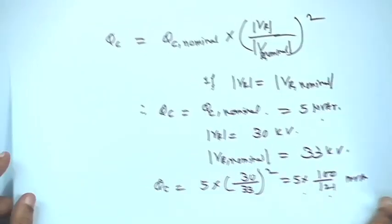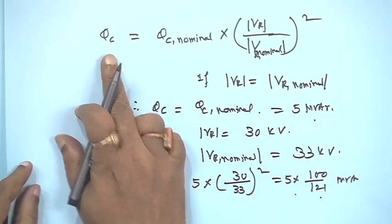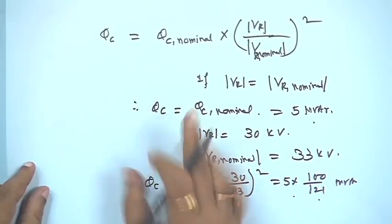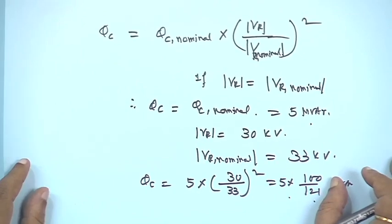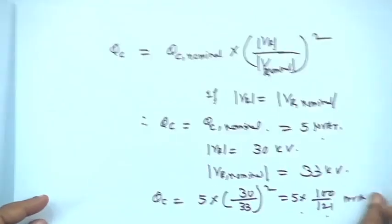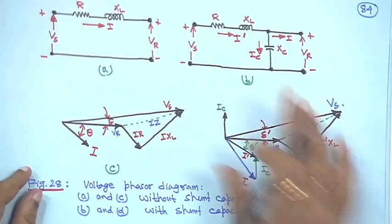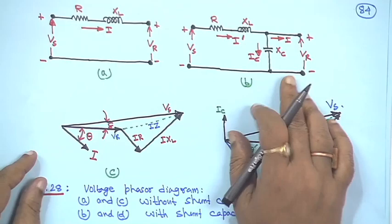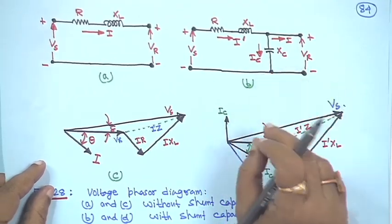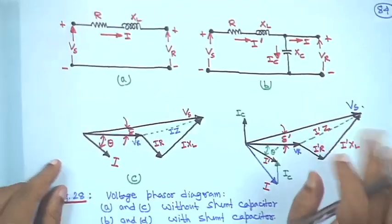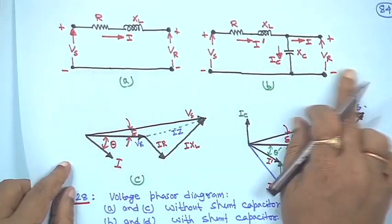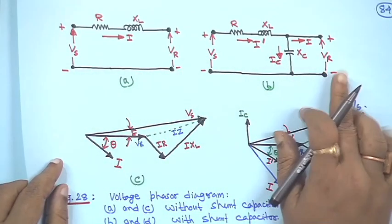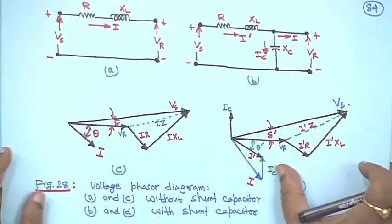In summary: Q_C from a shunt capacitor is proportional to the voltage magnitude squared, and the capacitor is a constant impedance load. Everything should be solved on a per-phase basis, and this also relates to power factor improvement.